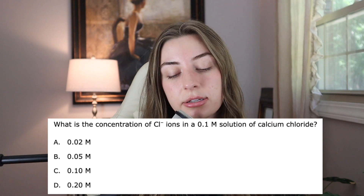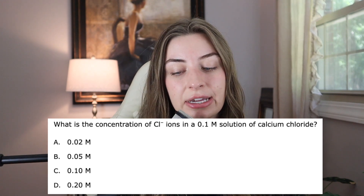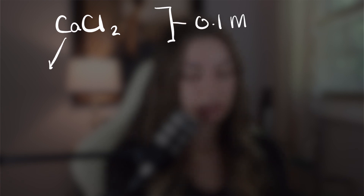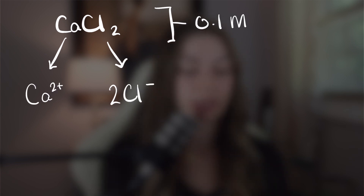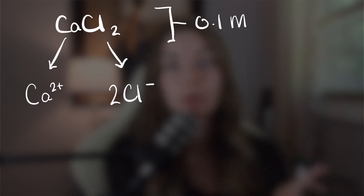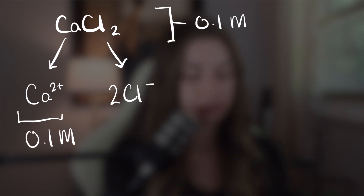Molarity is a measure of concentration — specifically, it's the moles of solute divided by the liters of solvent. Molarity questions typically aren't crazy, but here's one from the MCAT sample test: what is the concentration of chloride ions in a 0.1 molar solution of calcium chloride? Calcium chloride has two chloride ions for every one calcium ion, so when it dissolves, we get two chloride ions per molecule. That means the chloride concentration is actually double the original concentration — so we have 0.1 molar calcium and 0.2 molar chloride ions. The answer is D.